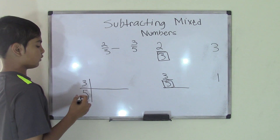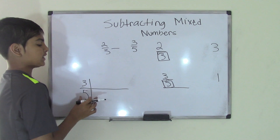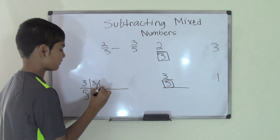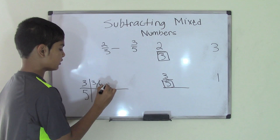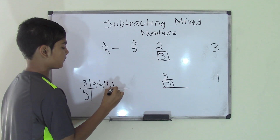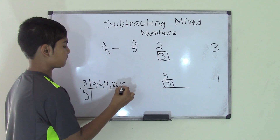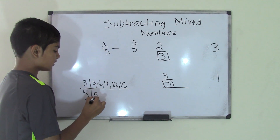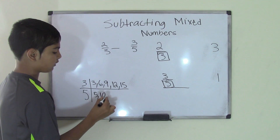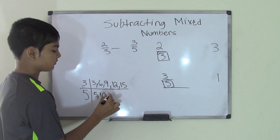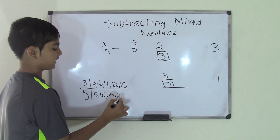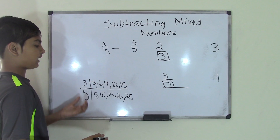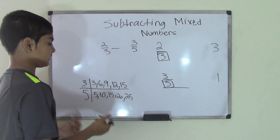So let's write the multiples of each number up to 5. So: 3 times 1 is 3, 3 times 2 is 6, 3 times 3 is 9, 3 times 4 is 12, 3 times 5 is 15. And then for 5: 5 times 1 is 5, 5 times 2 is 10, 5 times 3 is 15, 5 times 4 is 20, and 5 times 5 is 25. Now we have to find the least common multiple.